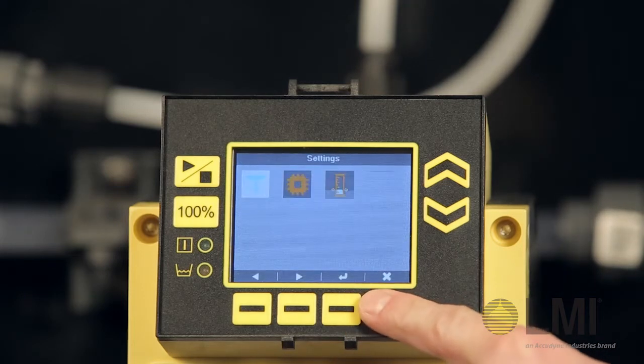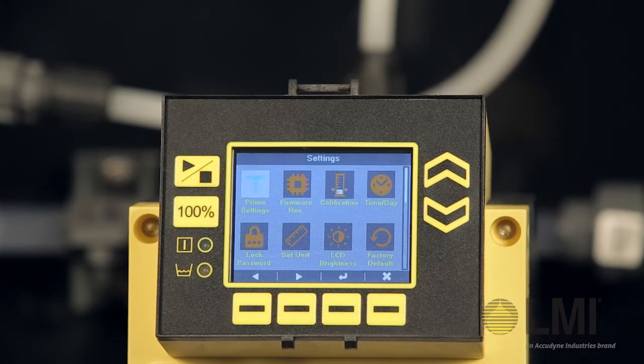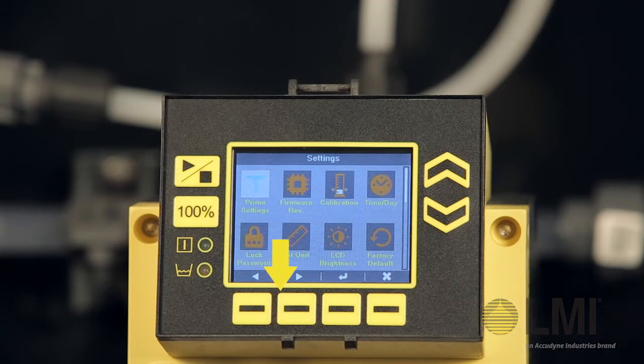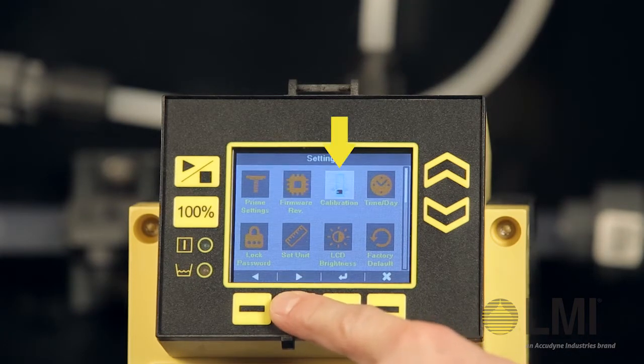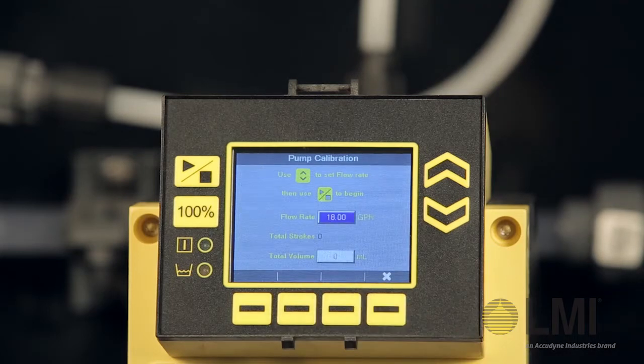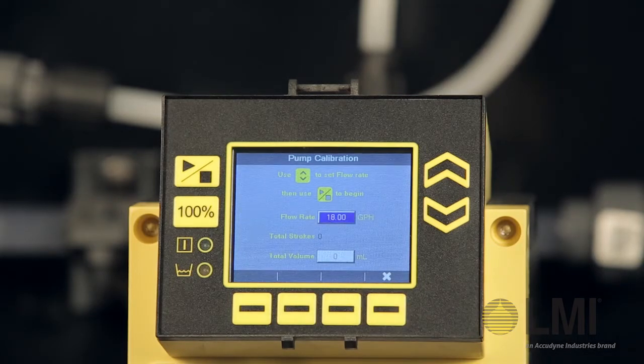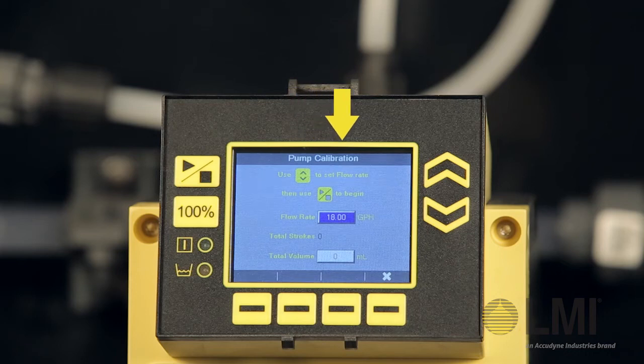You should now be in the settings menu. Using the context-sensitive arrow buttons below the lower left of your screen, navigate to the calibration icon and press the context-sensitive button for the enter icon. You should now be at the pump calibration screen.